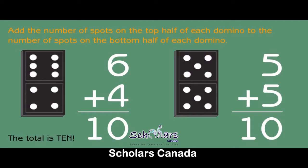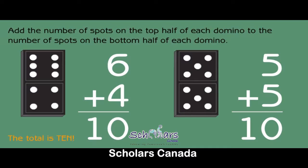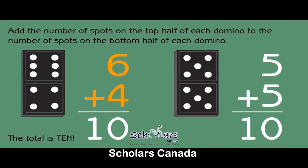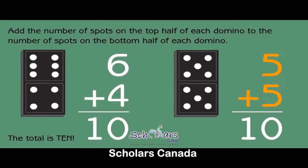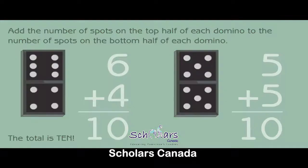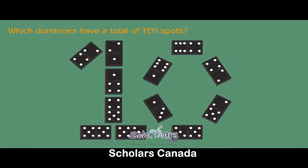Add the number of spots on the top half of each domino to the number of spots on the bottom half. The total is ten. Six plus four equals ten. Five plus five equals ten. Which dominoes have a total of ten spots?